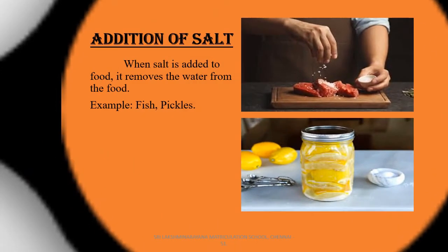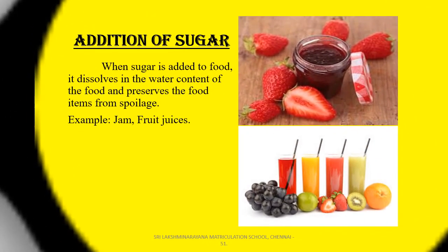Addition of salt: in this method, we add more salt to the food. The addition of salt removes the water content in the food. Examples include pickles and fish. Addition of sugar: if we add sugar to the food, it dissolves the water content and preserves the food from spoilage for a long time. Examples include fruit juices, jam and others.